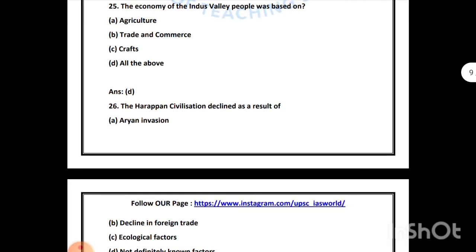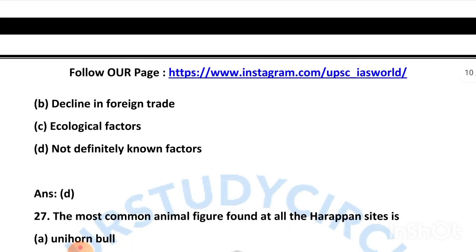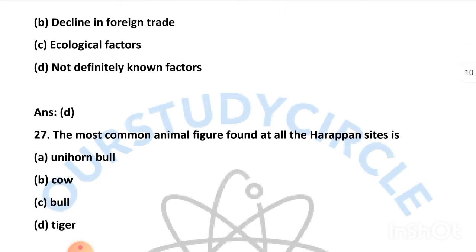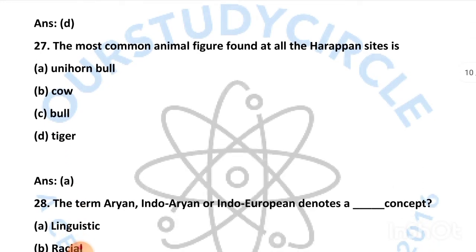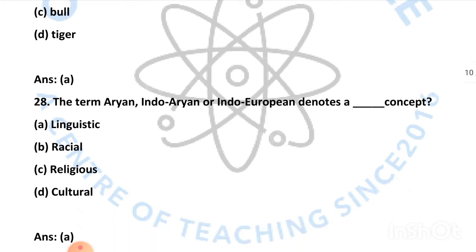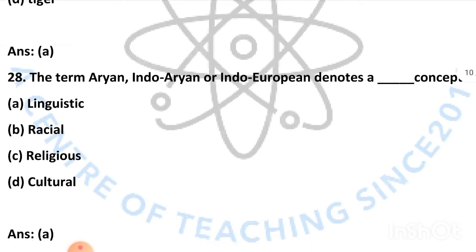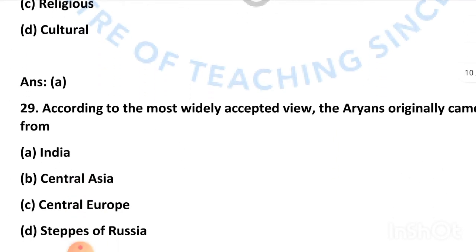Our next question is: the Harappan civilization declined as a result of — and the right answer is not definitely known factors. Our next question is: the most common animal found at all Harappan sites is — and the right answer is the Unicorn Bull. Our next question is: the term Aryan, Indo-Aryan, or Indo-European denotes a concept — and the answer is linguistic.